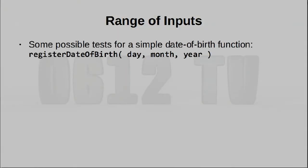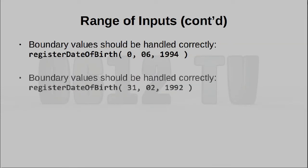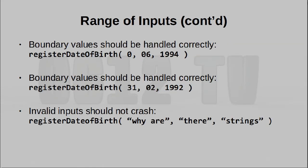For every piece of code, we'll want to try several different inputs on it. We want to make sure that good input is accepted. We want to ensure that bad input is rejected. We want to ensure that inputs at a boundary of good and bad are being handled appropriately. And finally, we want to make sure that completely invalid inputs don't crash your system — your system is able to show some kind of error, but doesn't actually accept the value.